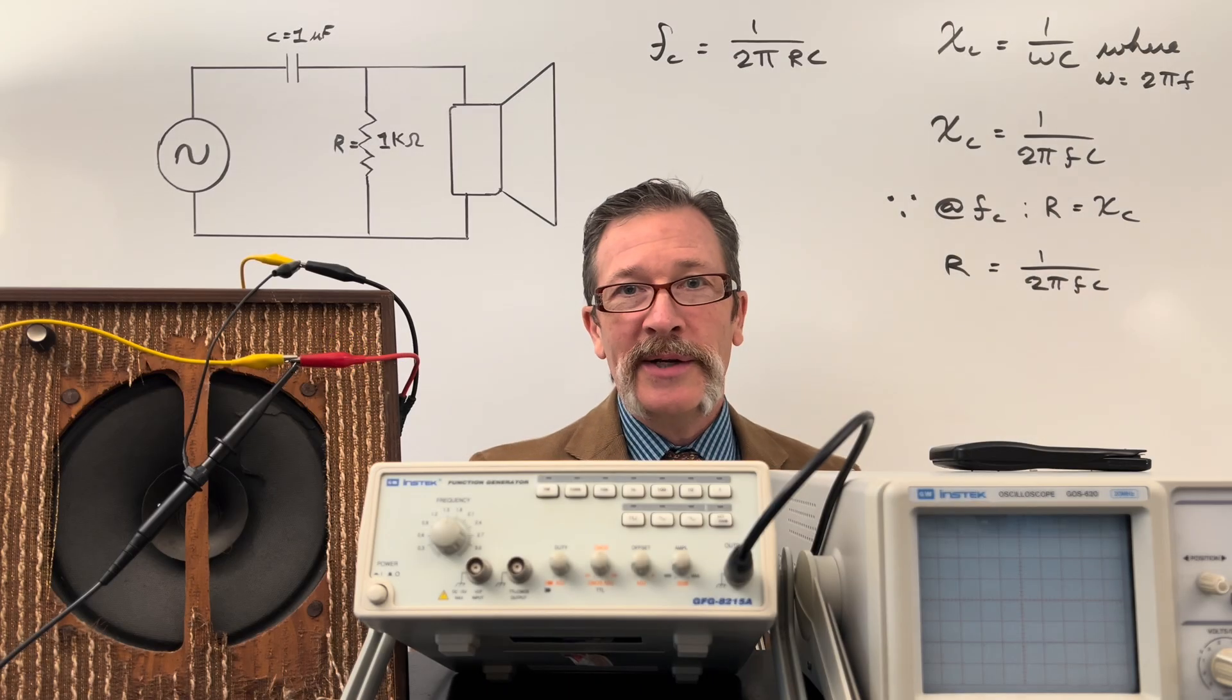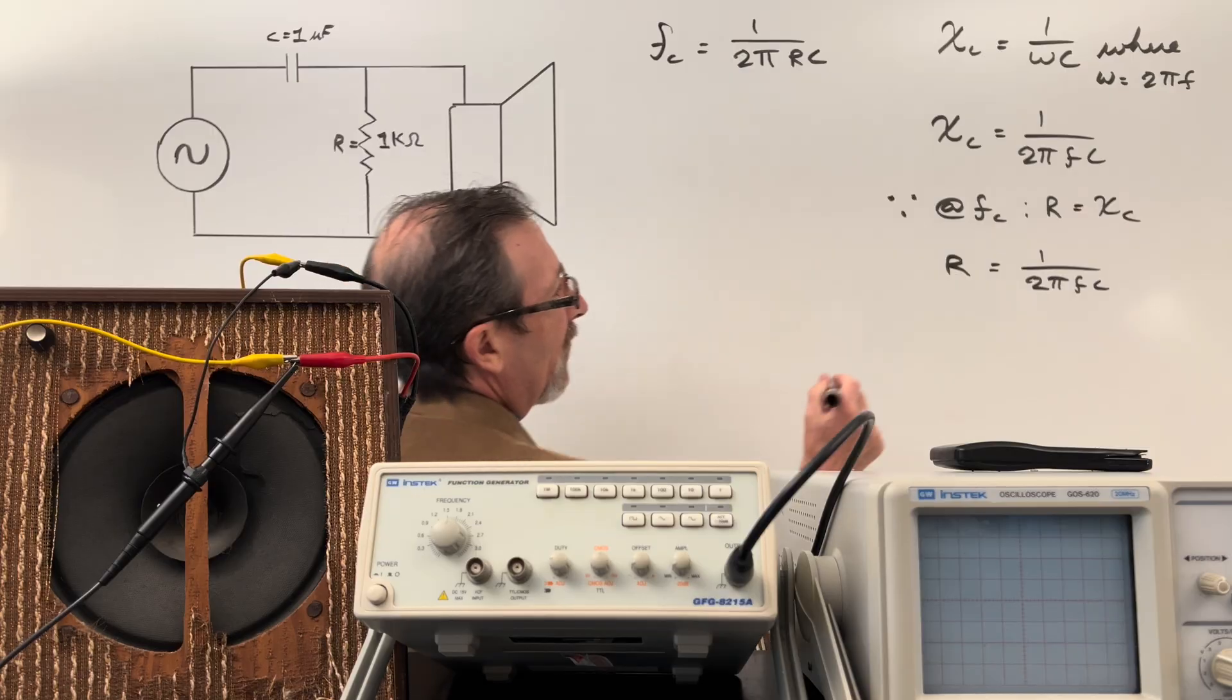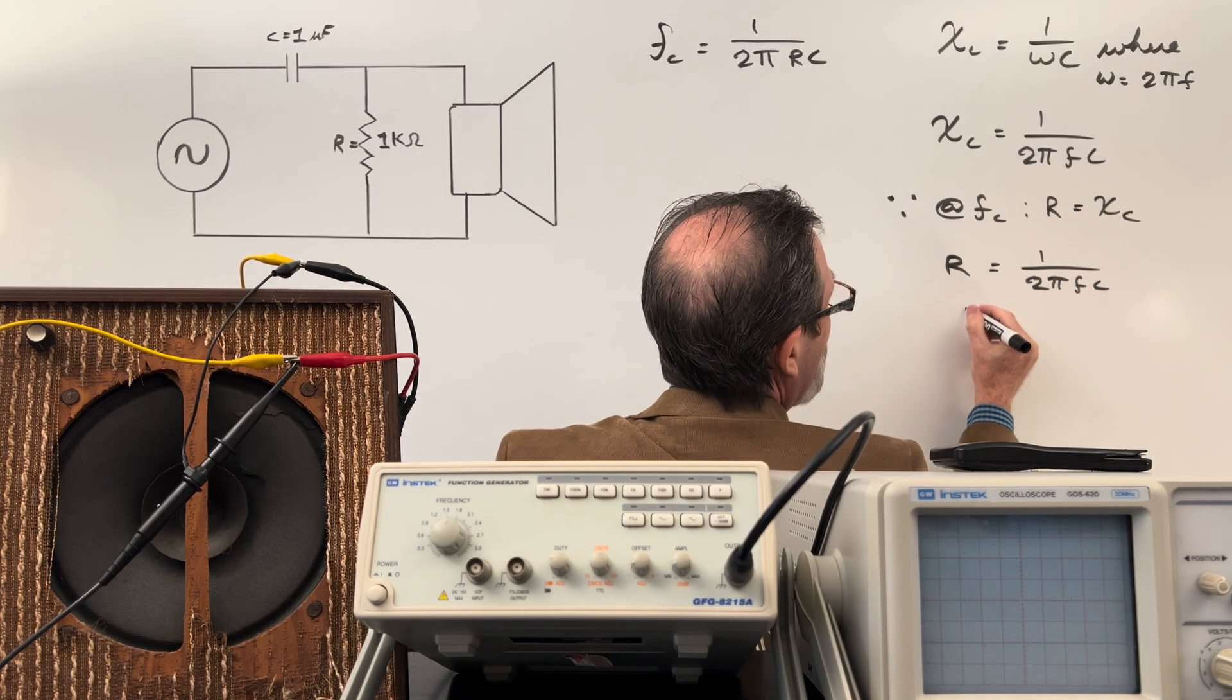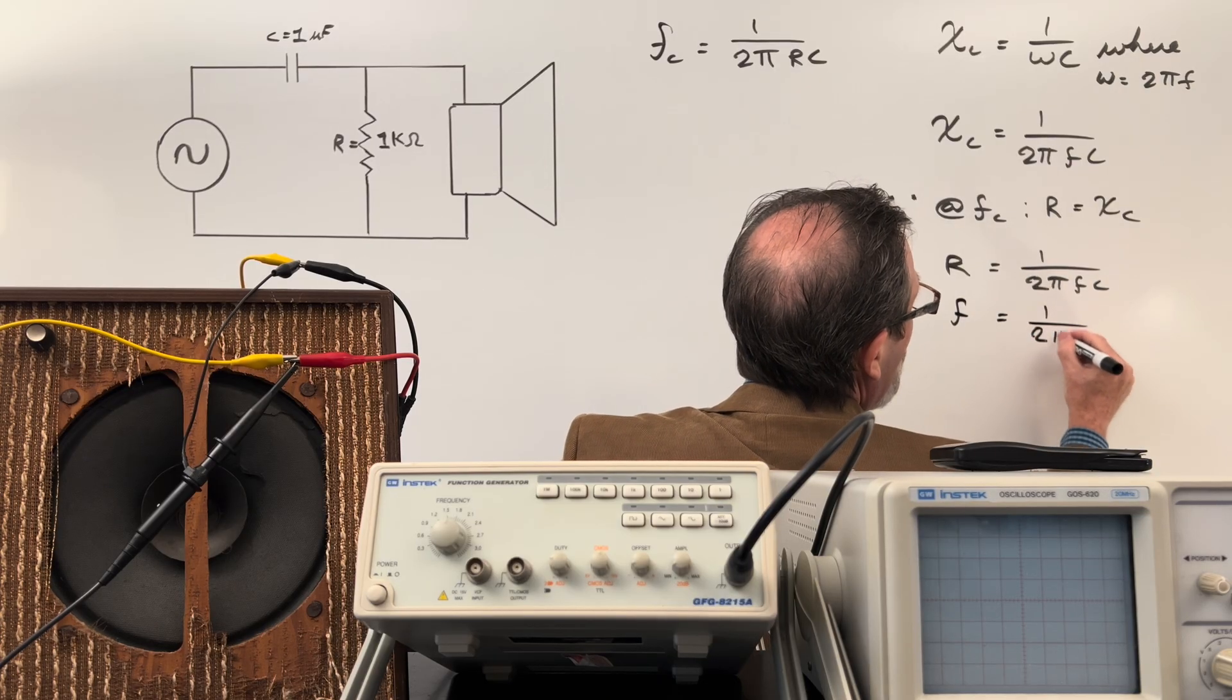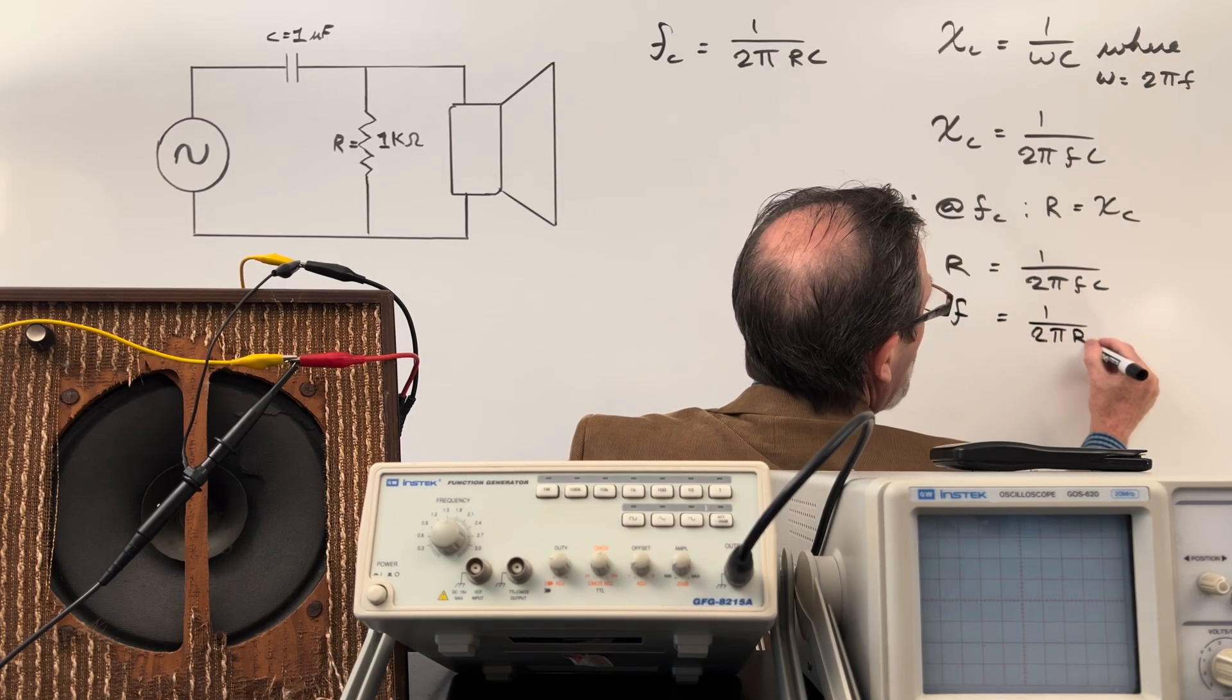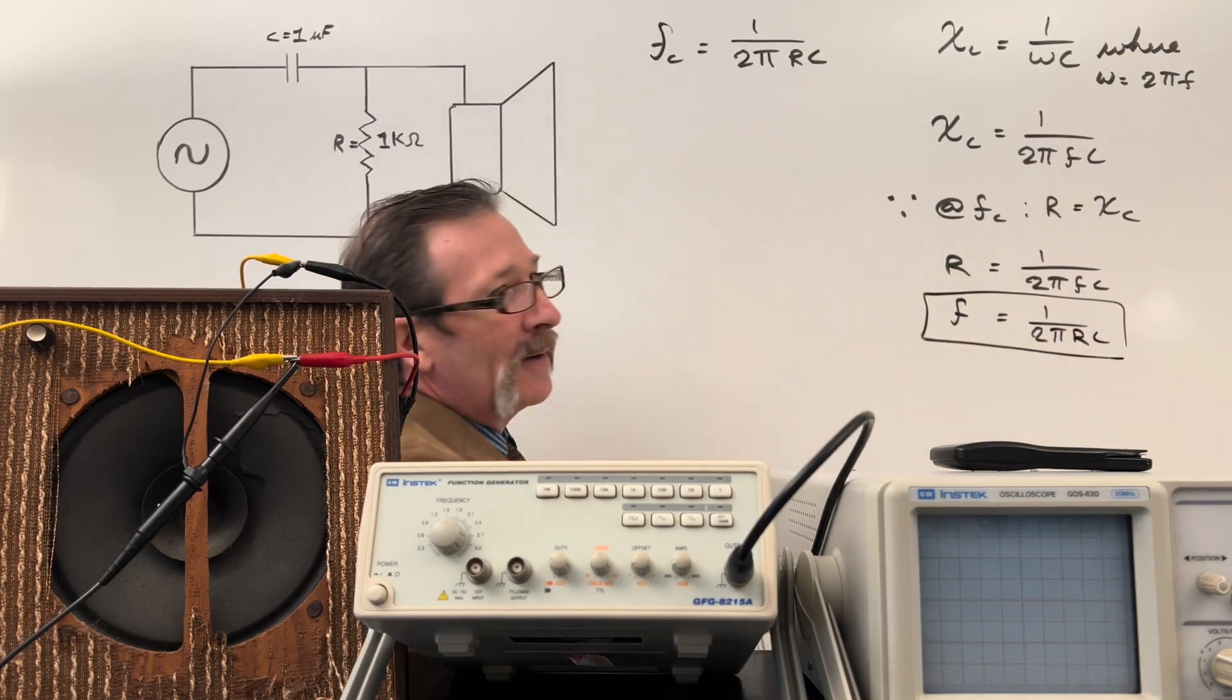Some students will be pretty excited because they can say: oh look, it's that formula right there. If I rearrange this, my frequency is 1 over 2πRC. And that formula is the same as that one up there. Got it. But they still need to figure out what a capacitor is doing in this circuit.